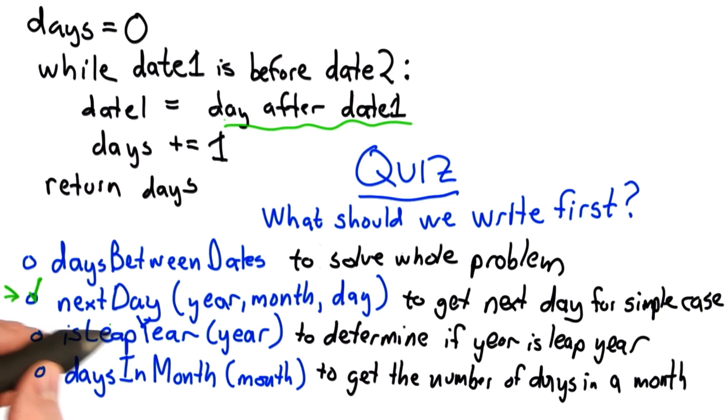The other answer that I think would be okay is doing is leap year. This is something we know we're going to need at some point. We need to determine whether years are leap years to know how many days there are in the month of February.